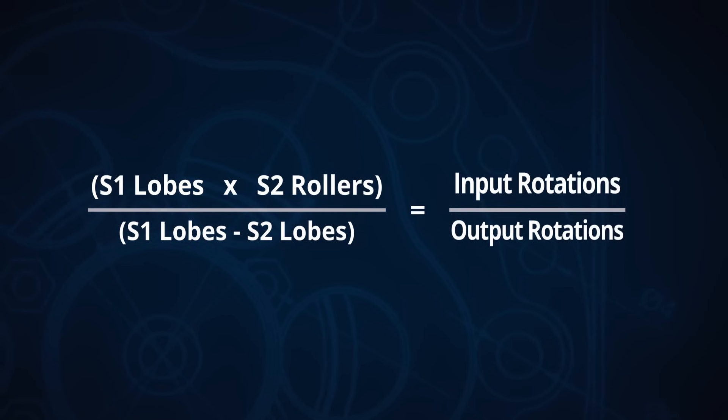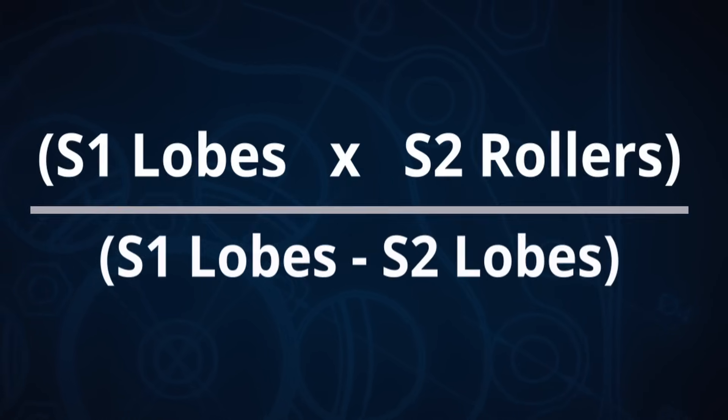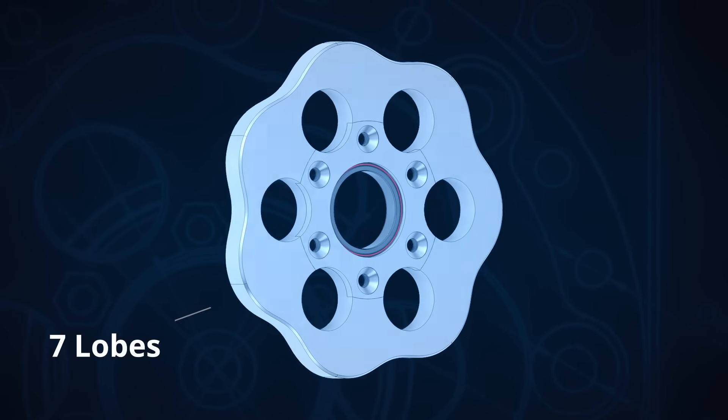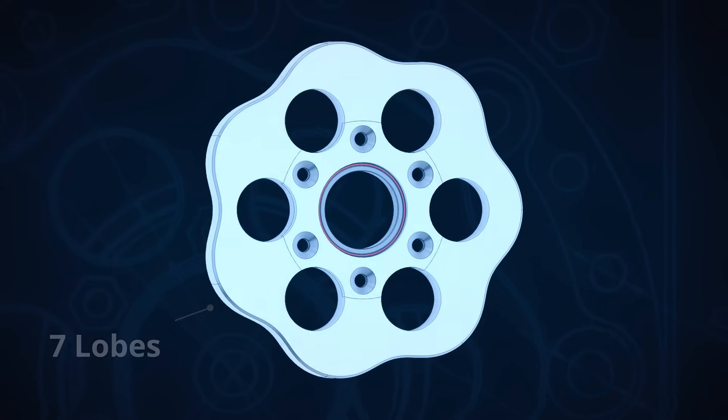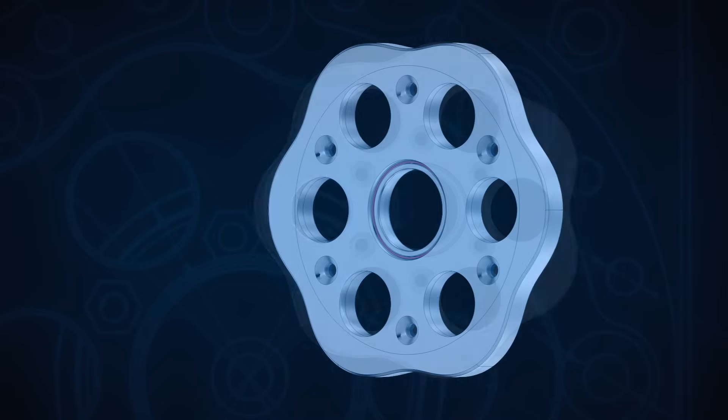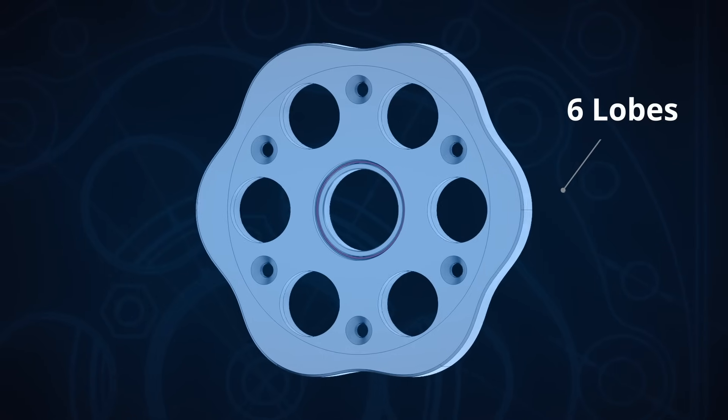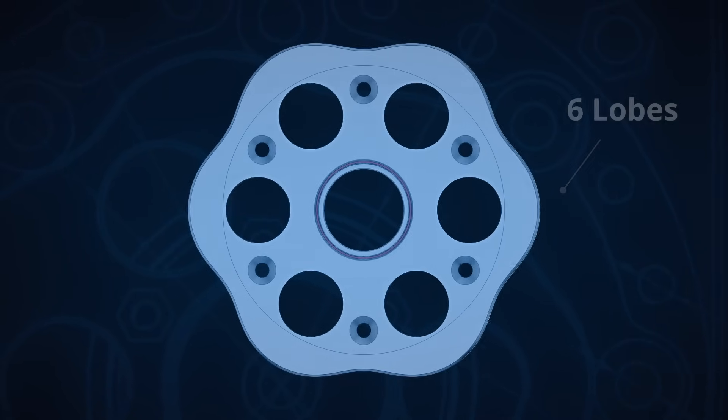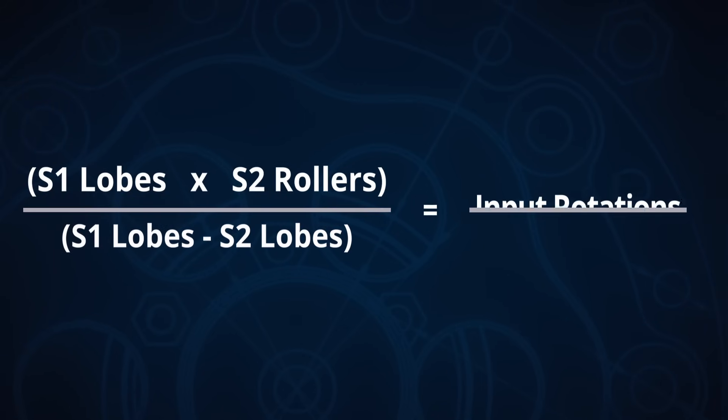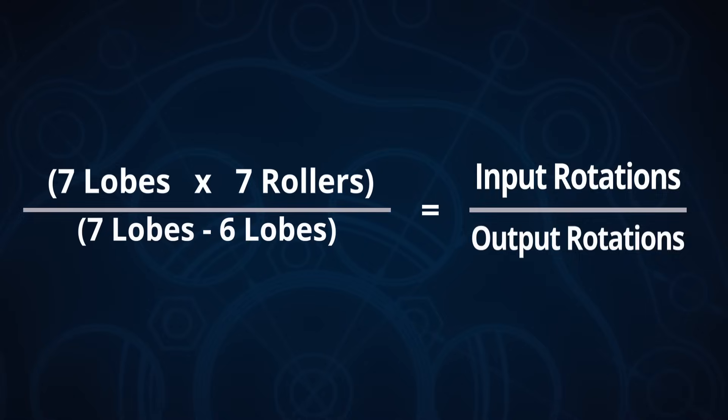Now, there's actually a bit more to it than this. So let's take a look at the whole equation. And what's that bit we added to the bottom? Well, that's the difference between the lobe counts of the two stages. So this isn't much of a factor for this example. And when we plug in our numbers, we take the 7 lobes from stage 1 minus the 6 lobes from stage 2, which equals 1, and 49 to 1 is the final reduction.